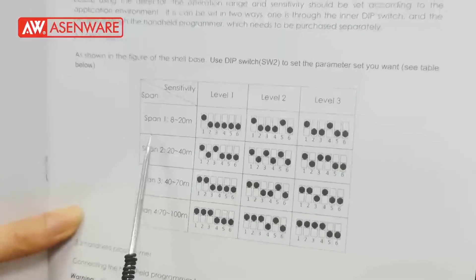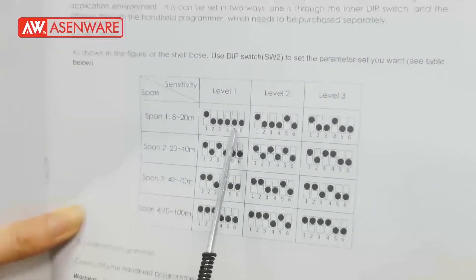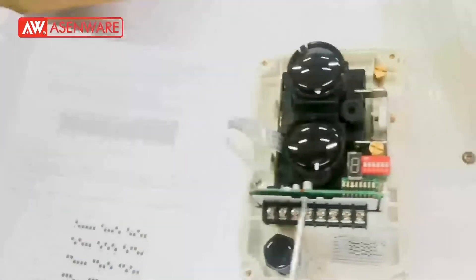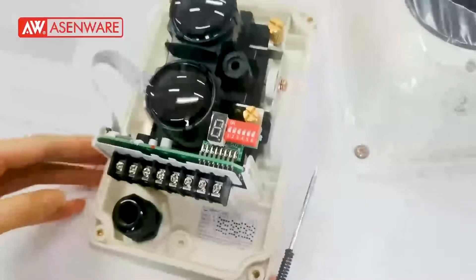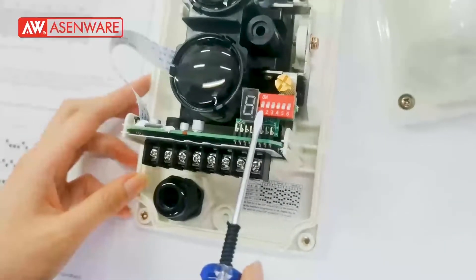For example, now we adjust the span 1 and level 1 like this. Open the beam smoke detector on here.